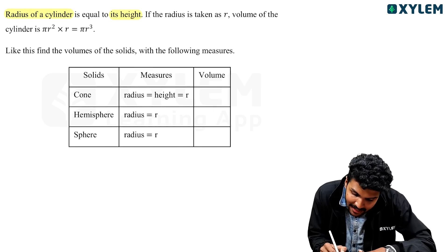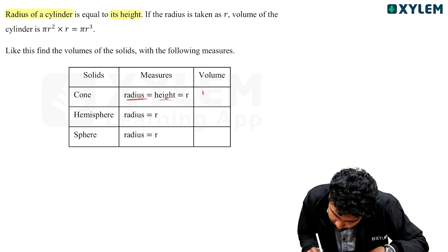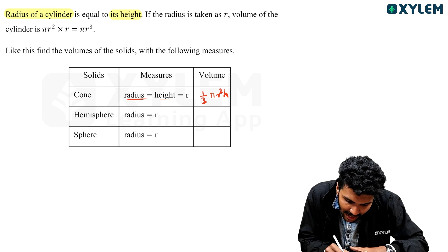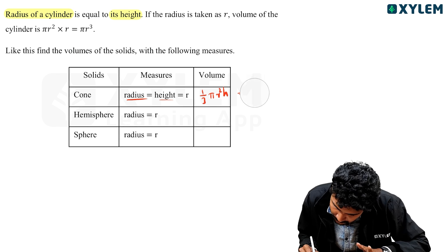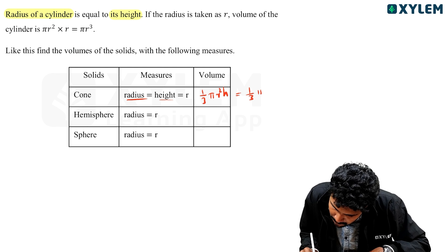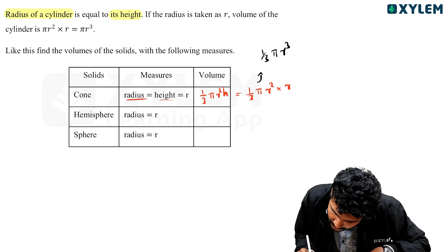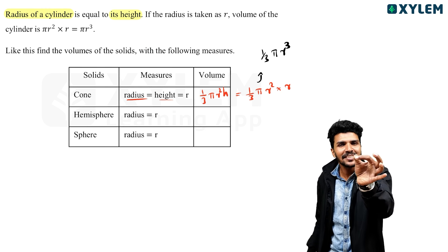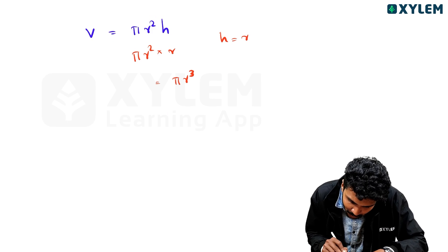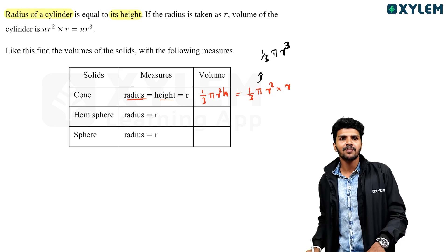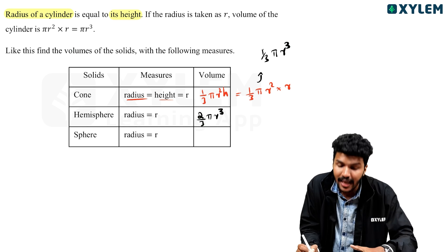One doubt — where is the radius? Height, then volume. The cone volume is 1 by 3 pi r squared h. That's cylinder volume times 1 by 3. If h equals r, then it becomes 1 by 3 pi r cube. The hemisphere radius volume is 2 by 3 pi r cube.